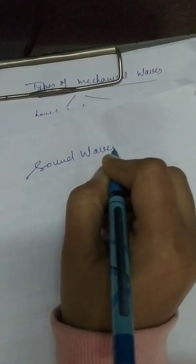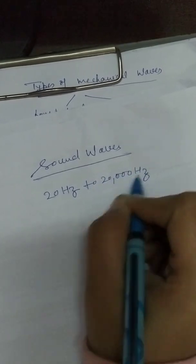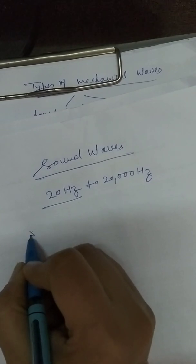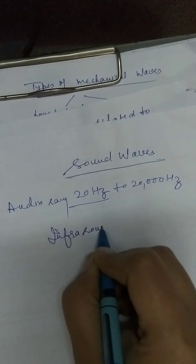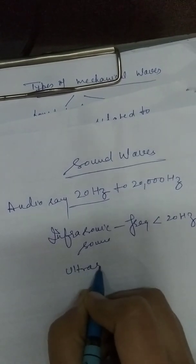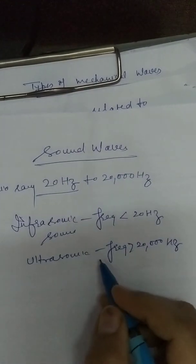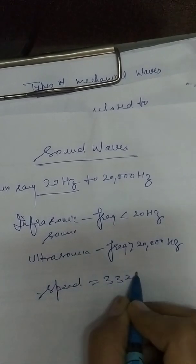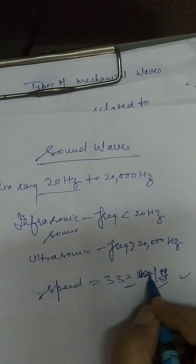Now, sound waves: these are frequencies audible to humans, ranging from 20 Hz to 20,000 Hz. Frequencies less than 20 Hz are called infrasonic sound. Frequencies greater than 20,000 Hz are ultrasonic. The speed of sound in air is 332 meters per second.